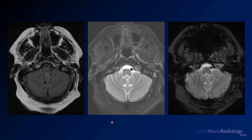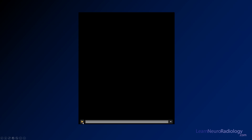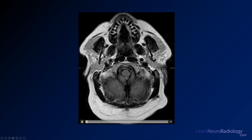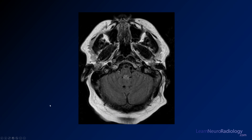Moving on to MR images: here we have a FLAIR, a T2, and a gradient through the lower cerebellum — kind of the fourth ventricular outflow tract. Hopefully by now you've identified where the abnormality is. Here I have a movie scrolling through those images so you can see a little better.